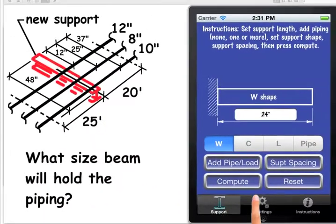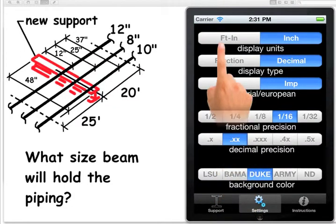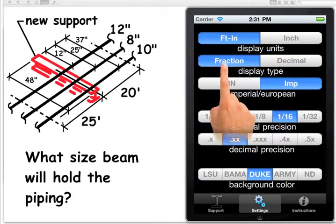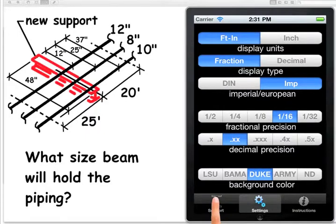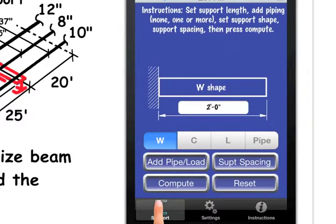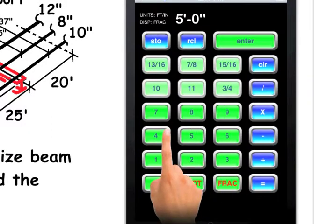There are unit settings. We can work in decimal or feet or inches. I'll set it right now to work in feet and fractions. Now that's done. The first thing we will do is set the support length to 4 feet.